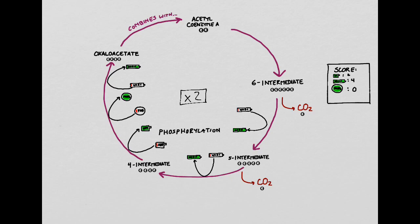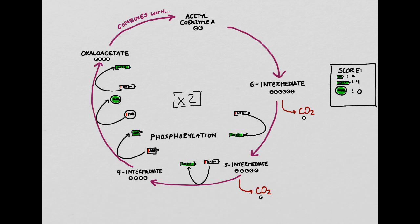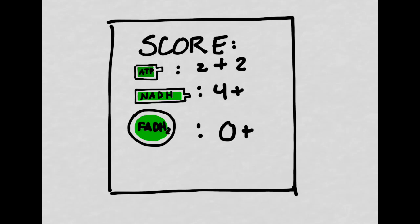Now let's check out our scorecard from the Krebs cycle. After the prep steps, we had two ATP, four NADH, and zero FADH2. Count how many of each molecule we create during a rotation of the Krebs cycle — and don't forget that for every molecule of glucose, the cycle happens twice. We've made two new molecules of ATP during the Krebs cycle, one per rotation. We also made six molecules of NADH, three per rotation. And we made two molecules of FADH2 total, one per turn of the Krebs cycle.